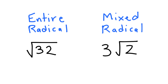With a mixed radical, we actually have a multiplication with a rational number. So we have 3, which is a rational number, times the square root of 2. Even though we don't have the multiplication sign, you can think of it almost like polynomials — this is 3 times the square root of 2. Not everything is underneath that root sign, so it's almost like the radical has been broken up into two components.